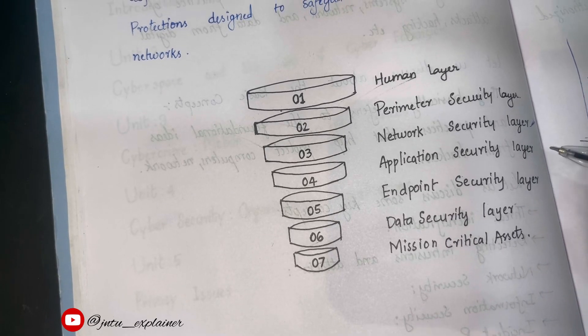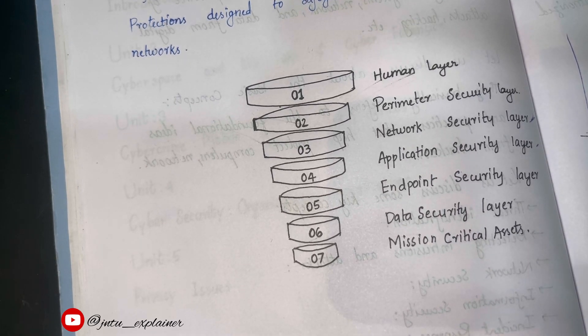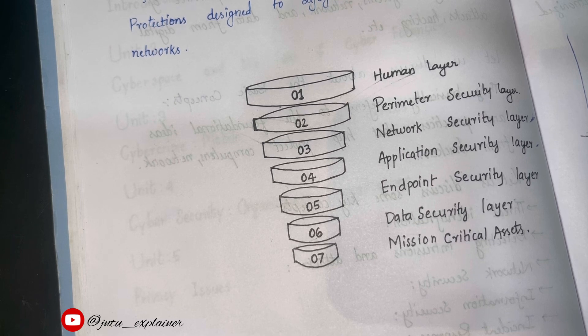Let's discuss the fourth layer, which is application security layer. This layer focuses on keeping software and devices free of threats. We will be learning what is mean by threats and types of threats in our next video.